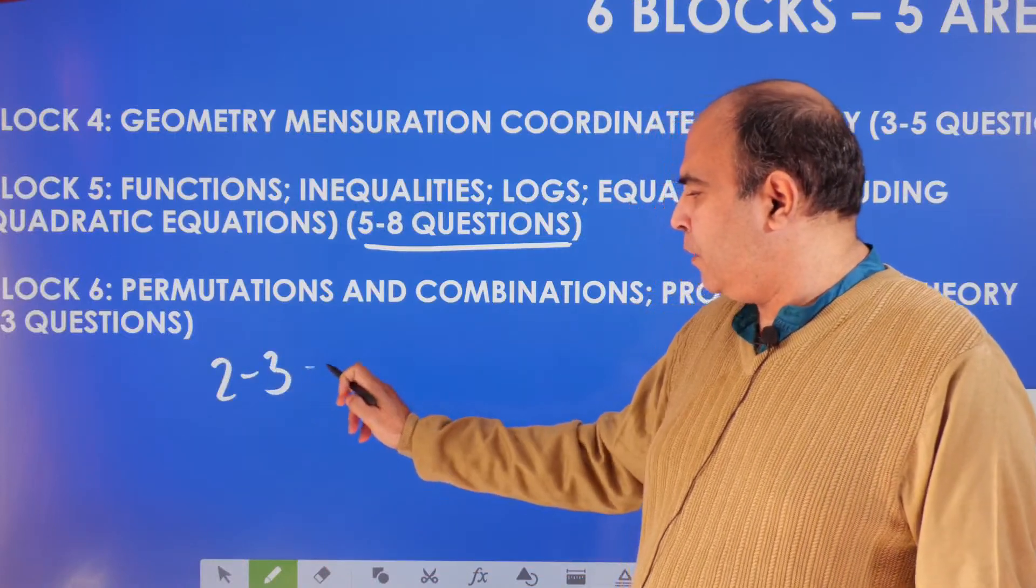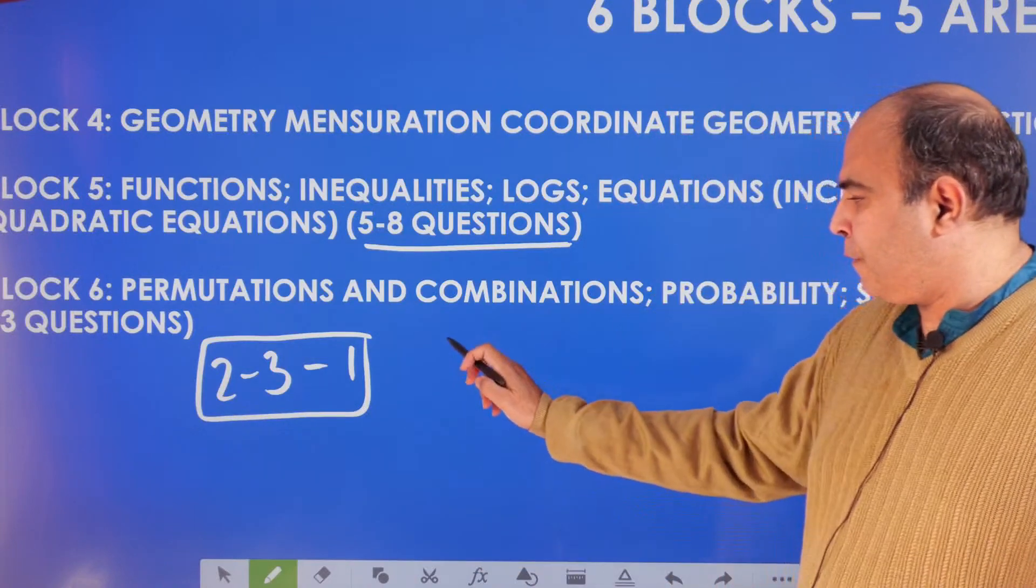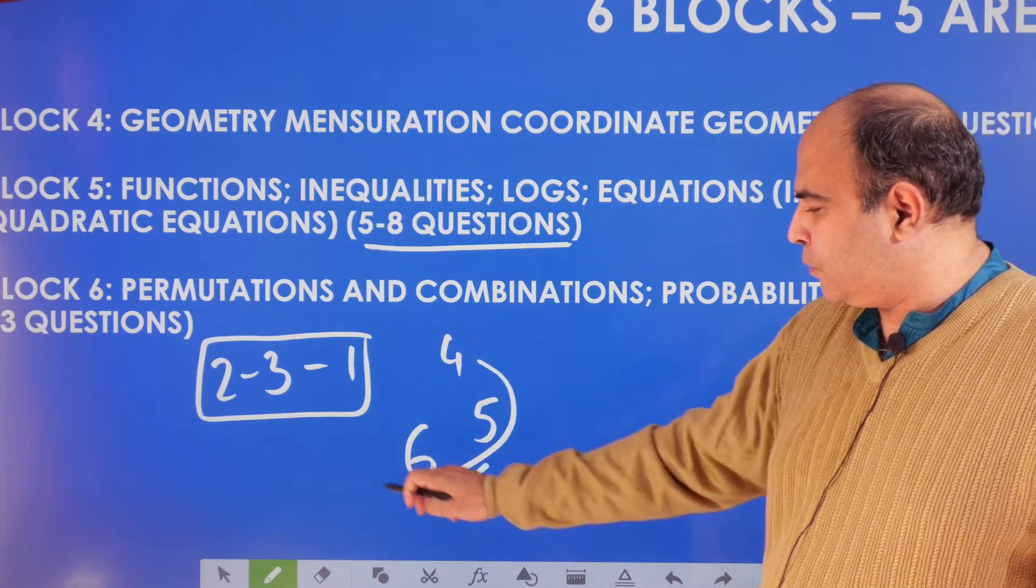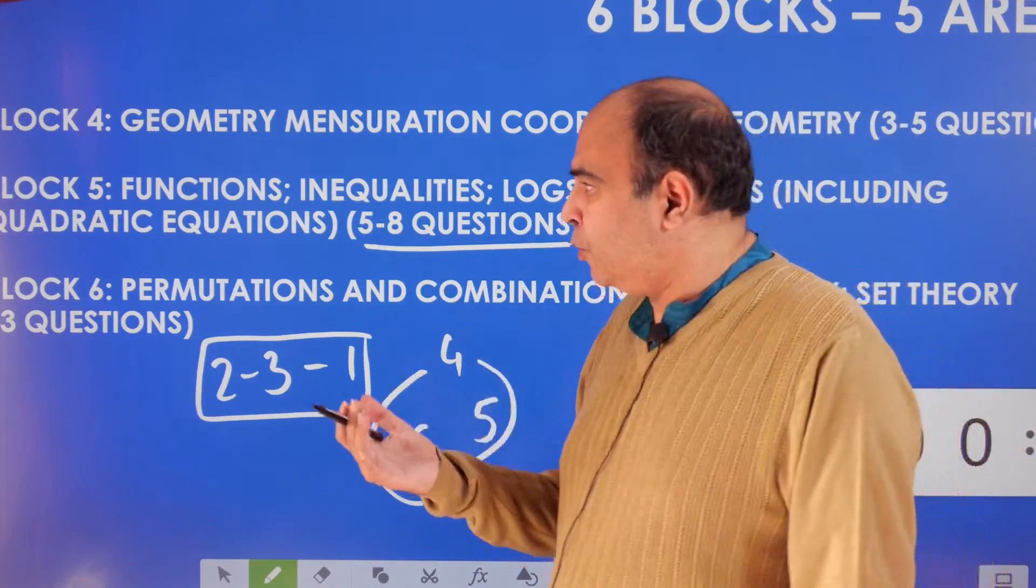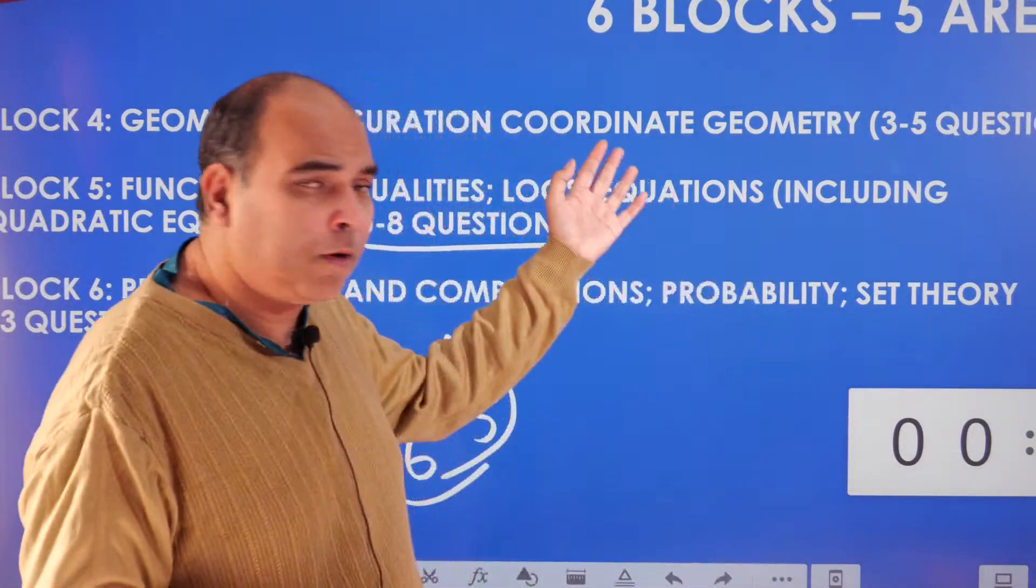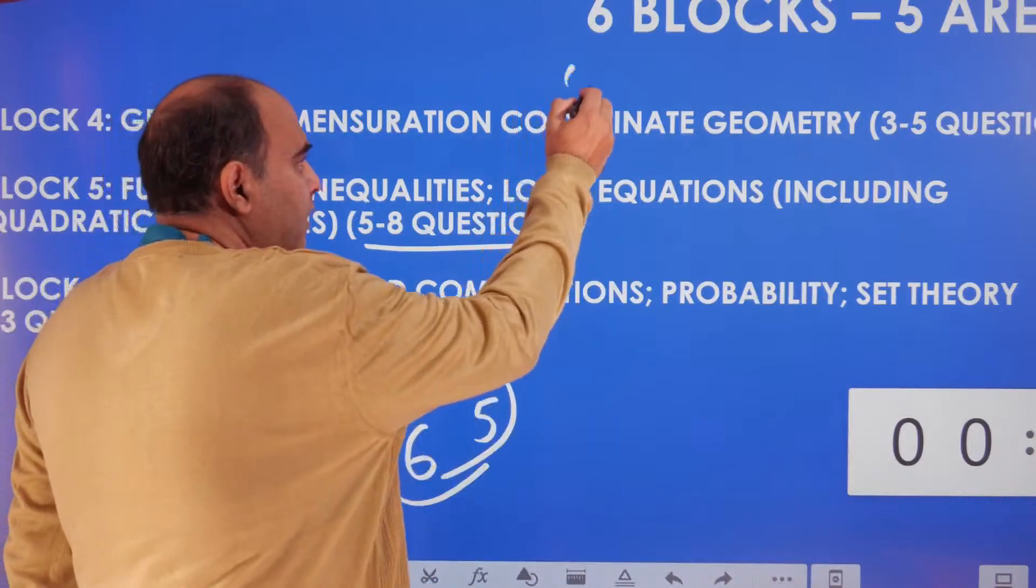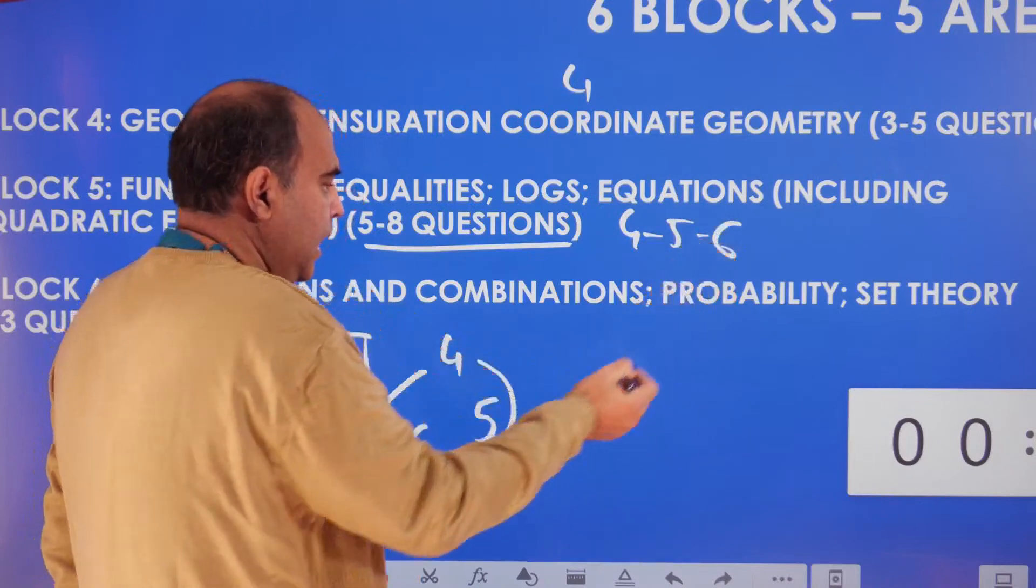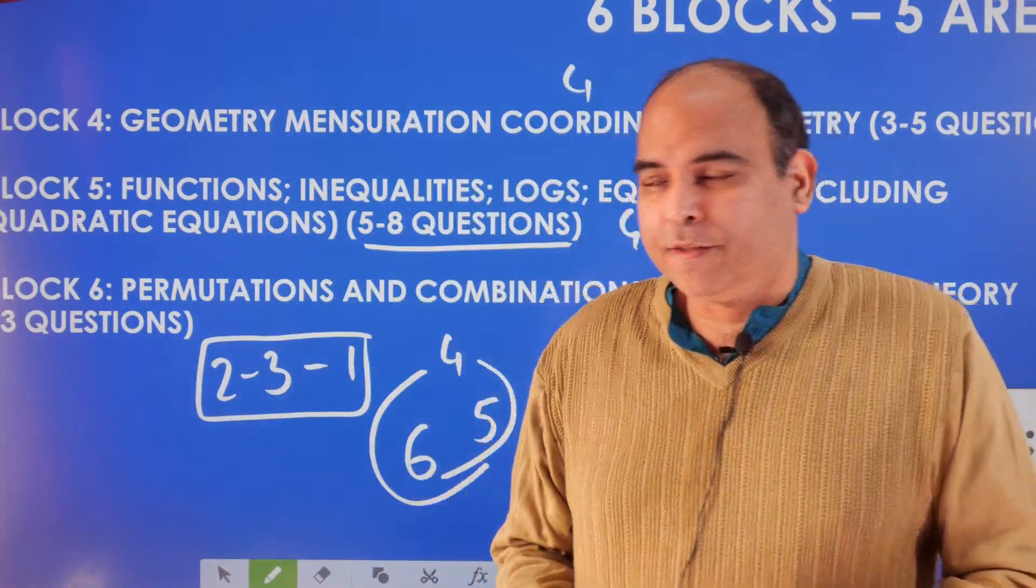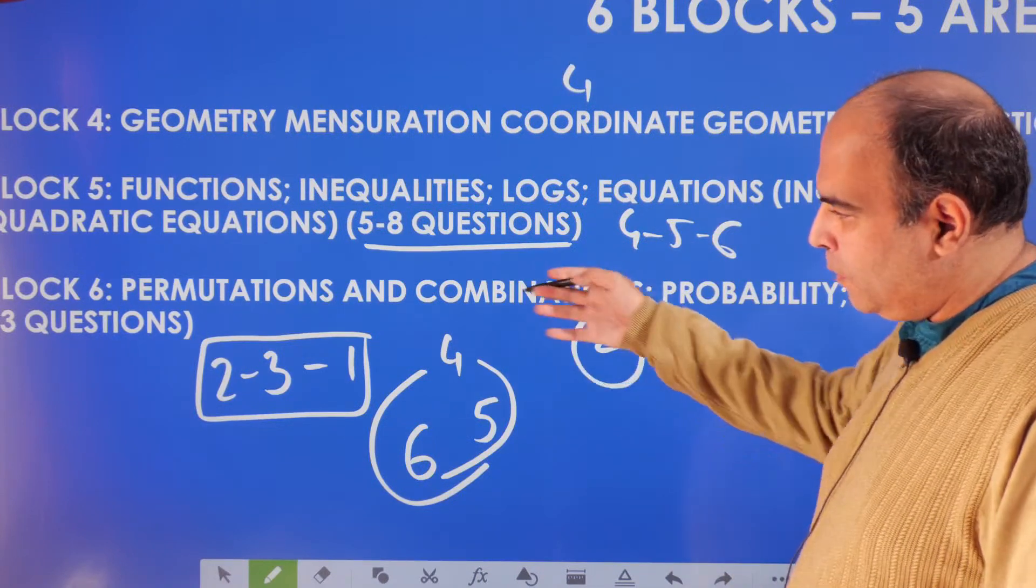Once you finish Block 2-3 followed by 1, halfway through the syllabus, the other half—4, 5, 6—you can actually order in any order. You can do 4-5-6, 5-6-4, 6-5-4, or 6-4-5. Typical timelines: geometry takes around three to four weeks, Block 5 around four to five weeks, maybe six weeks. The last but not the least—last and the least actually—is Block 6: permutations, combinations, probability, and set theory, around one to three questions only. This is basically a two-week visit.